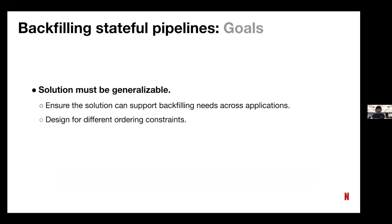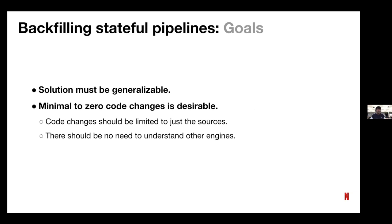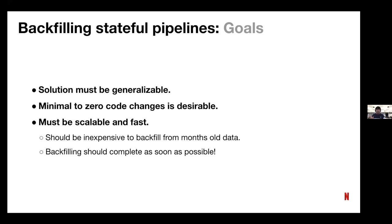Based on this, we can arrive at three separate goals for any backfilling solution. First, it should be applicable to all Flink applications, not just a specific application — just like increasing stream retention. Second, it should require no code changes, since with stream retention all you had to do was change configuration. Third, it must support backfilling months of data cheaply — the one property our previous solution did not have. This is precisely what backfilling using Iceberg provides.